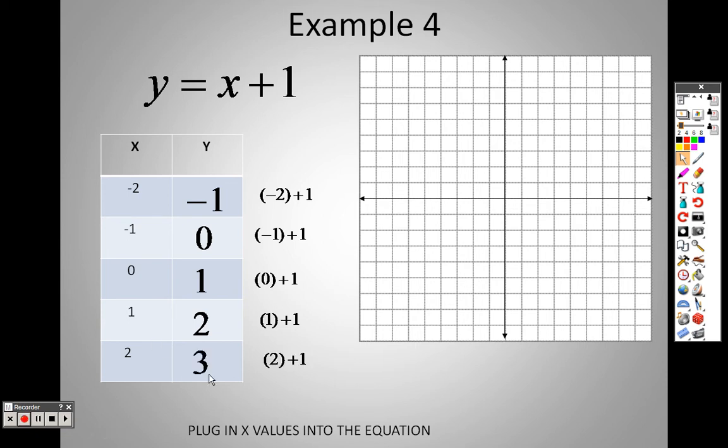What this gave me is it gave me my ordered pairs, right? An ordered pair is negative 2, negative 1. Another ordered pair is negative 1, 0. Another ordered pair is 0, 1. 1, 2, 2, 3. Those are your ordered pairs. Those are the points you use to graph.